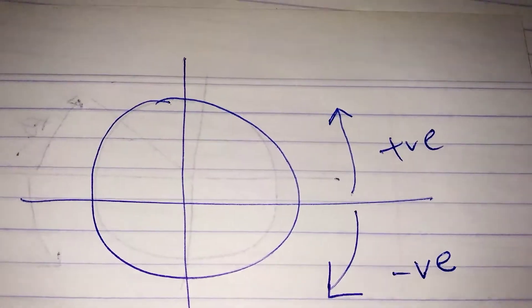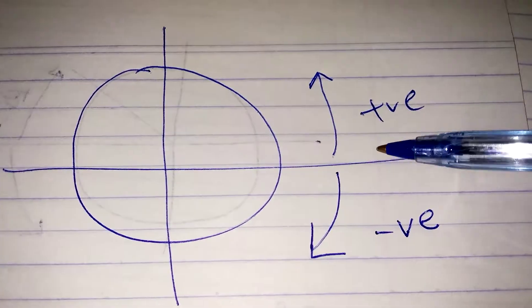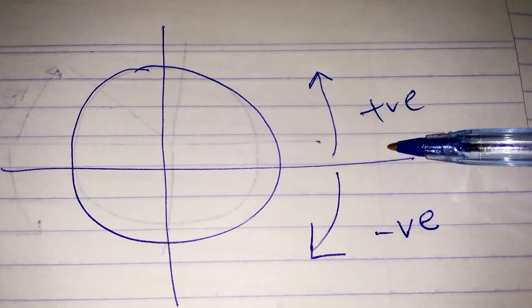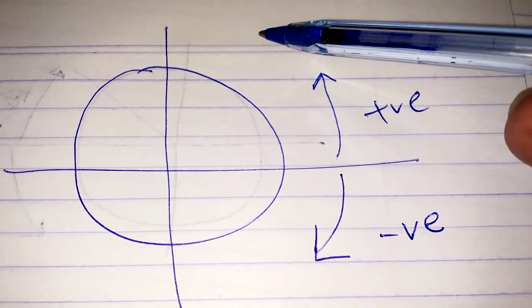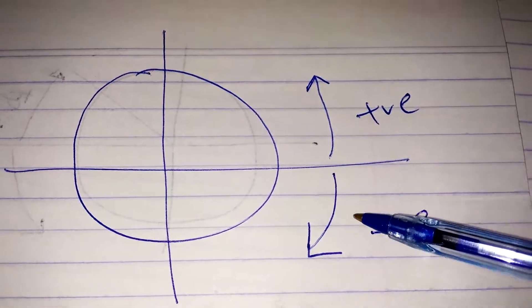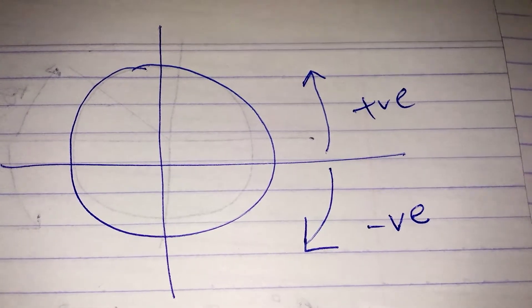Okay, to answer your question, let's recall that when we measure the angle in the anticlockwise direction, that angle is positive. If we measure the angle in the clockwise direction, that angle is negative.